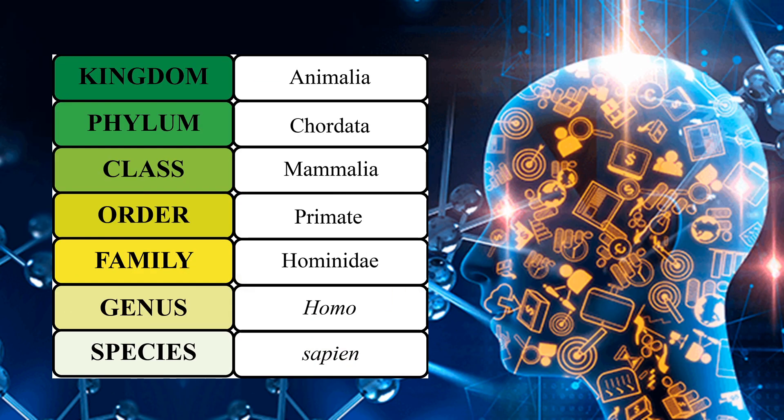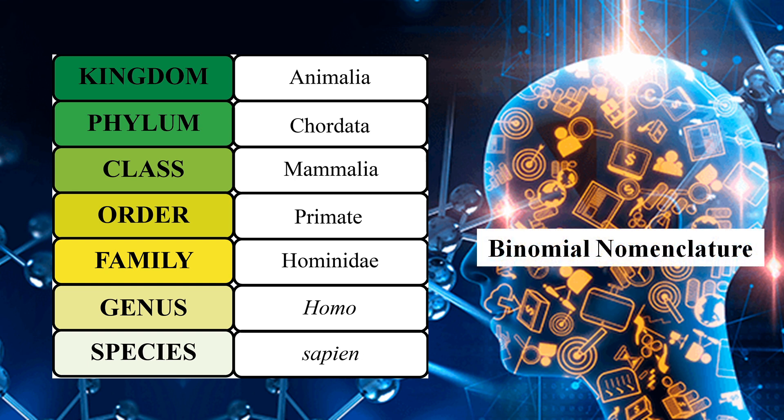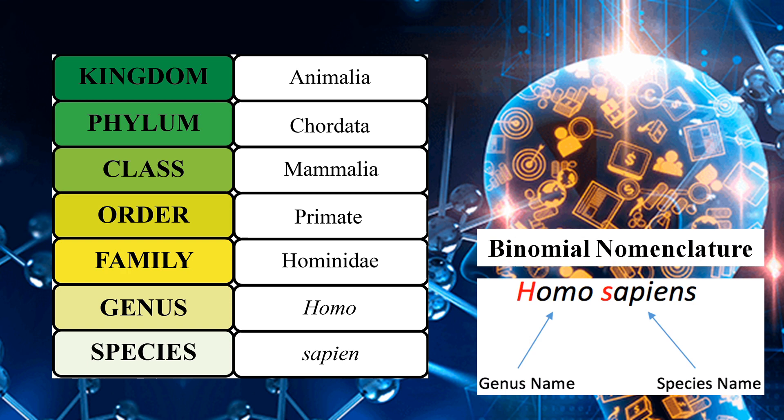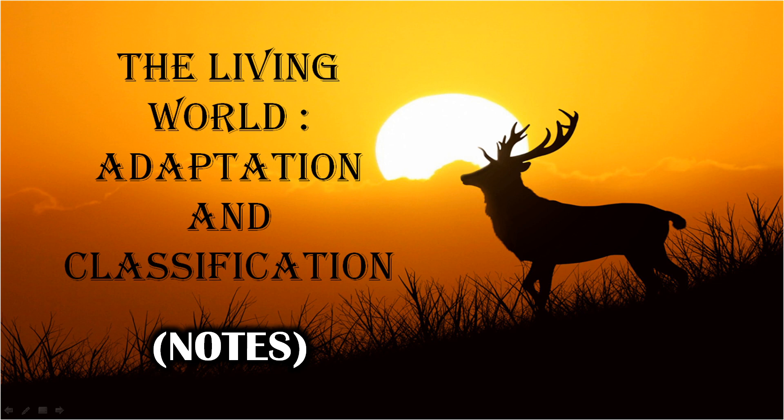Let's look at another example. Human beings belong to the genus Homo and species Sapien. So according to the binomial nomenclature, the scientific name of human is Homo sapiens. In this chapter, we have learned about adaptation in plants and animals and how they are classified. Moving on to the answers of the textbook back questions of this chapter.